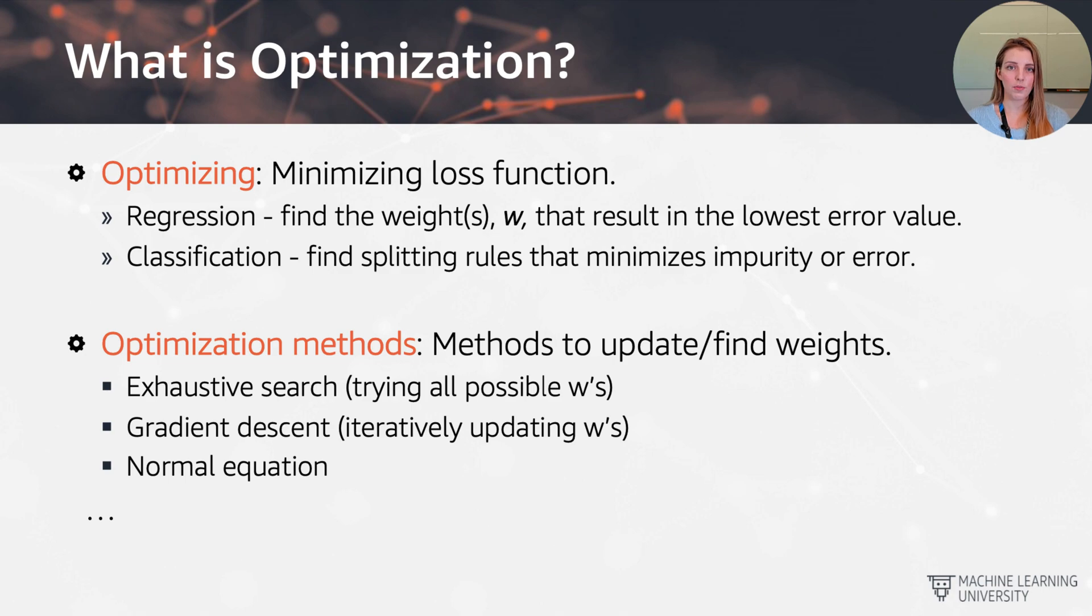So instead we would want to use something like gradient descent, which is going to be an iterative updating of the w values. And that is actually a method that is used very commonly in machine learning. And once again you see dot, dot, dot here because there are actually many more optimization methods out there as well. So it really comes down to the algorithm that you're choosing, the underlying data that you have, and then that will inform which optimization method will work best. Obviously there are a lot of considerations on computational efficiency for this as well. And as I already mentioned, gradient descent tends to come out on top.